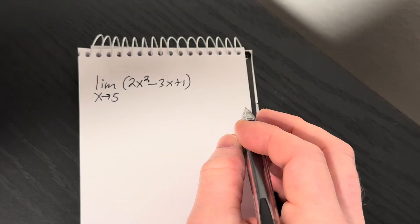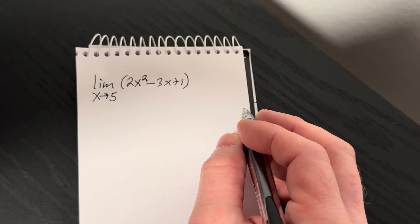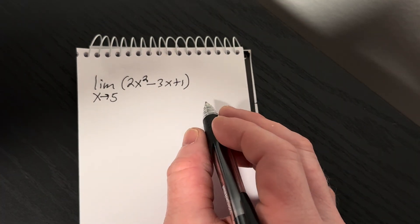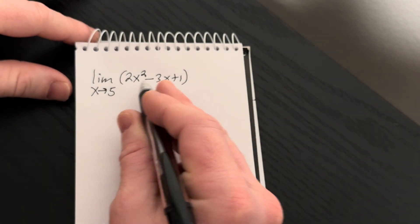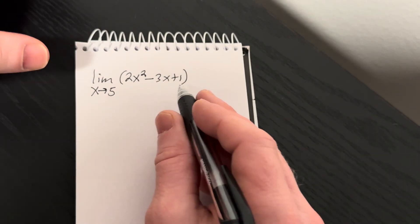Okay, so when you're finding limits, the first thing you need to do is see if you can actually plug the number in. So if you plug the 5 in here, there's no issues. You can plug in the 5.